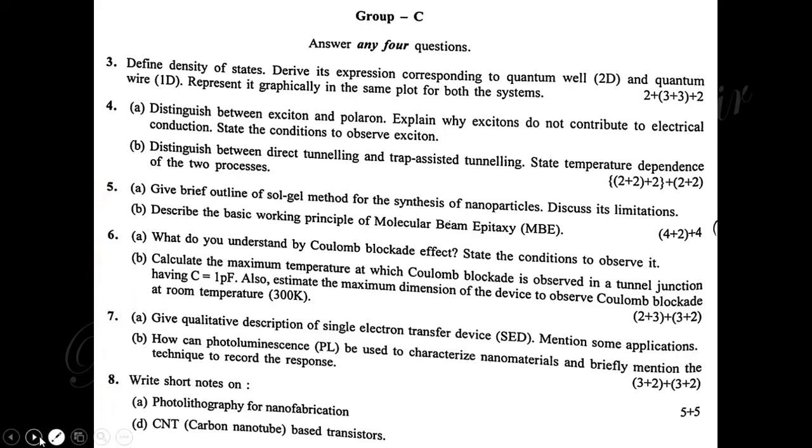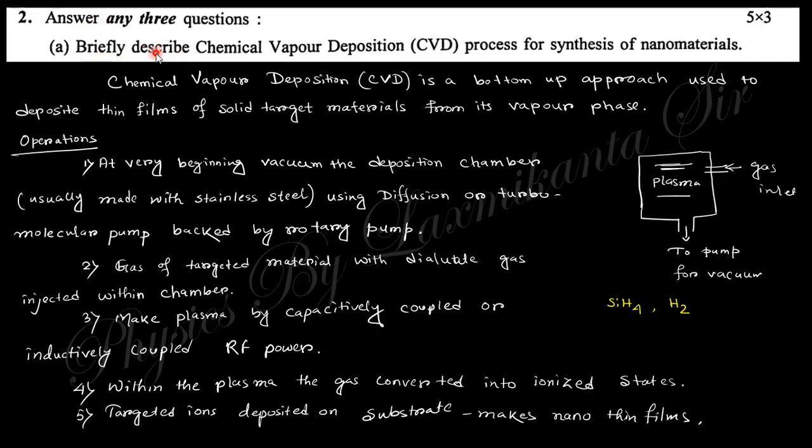First question says: Briefly describe the chemical vapor deposition process for synthesis of nanomaterial. Chemical vapor deposition, that is CVD, is actually a bottom-up approach. Bottom-up approach means small atoms are accumulated to form a nanomaterial. The operation is that there is a chamber made by stainless steel or quartz crystal, and we vacuum the system with a pump.